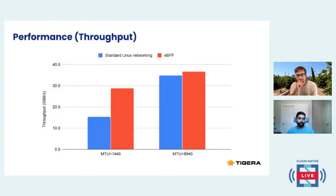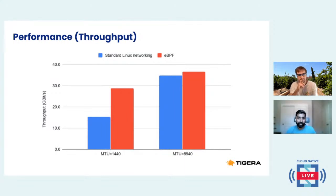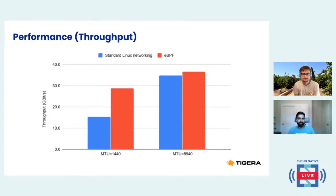When you talk about performance, we did a performance throughput measurement using qperf, using a pair of pods running on different nodes. On the left, the MTU was 1440, and on the right, the MTU is 8940. MTU is the maximum packet size — 1500 is the realistic number for internet traffic, and 9K is typically called a jumbo frame used within some data centers. We reduced it by 60 to be conservative in case you're running on top of some overlay network. We measured both CPU usage and throughput.